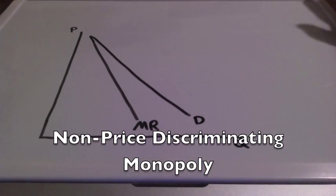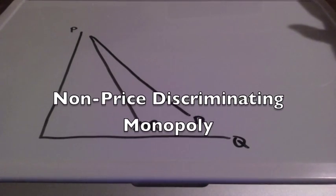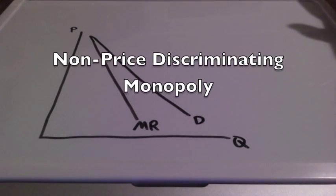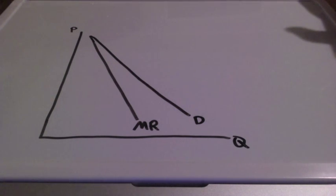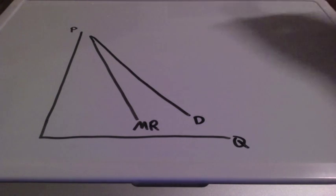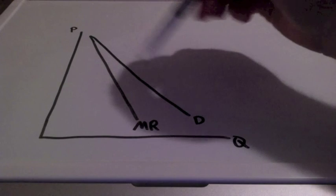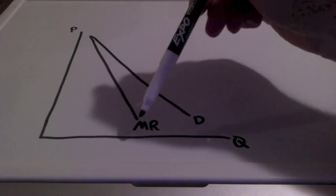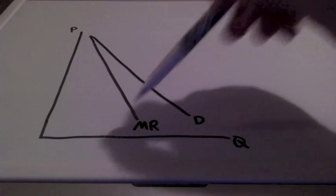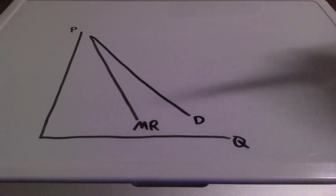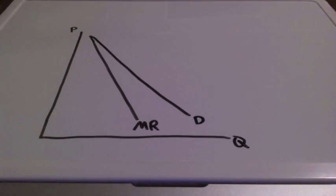In this lesson, we are going to take a look at a non-price discriminating monopoly. The first thing you notice is that the demand curve and the marginal revenue curve are separate — our marginal revenue curve lies beneath the demand curve.